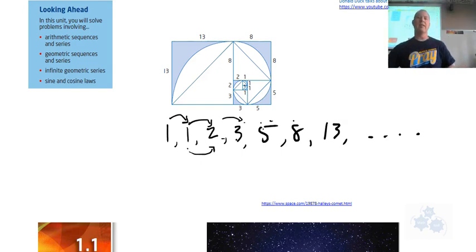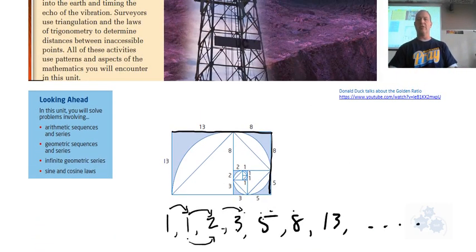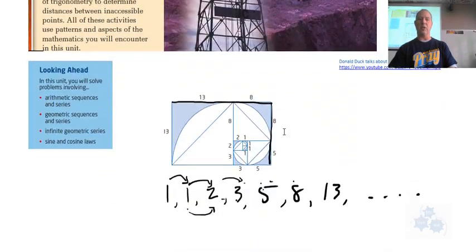This golden ratio that we can see here would be like this side of the rectangle compared to this side, and it's about 1.6. That's a ratio that is found a lot in nature. So that's kind of the intro, and we took a look at this Donald Duck video on YouTube, and he taught us about the golden ratio.